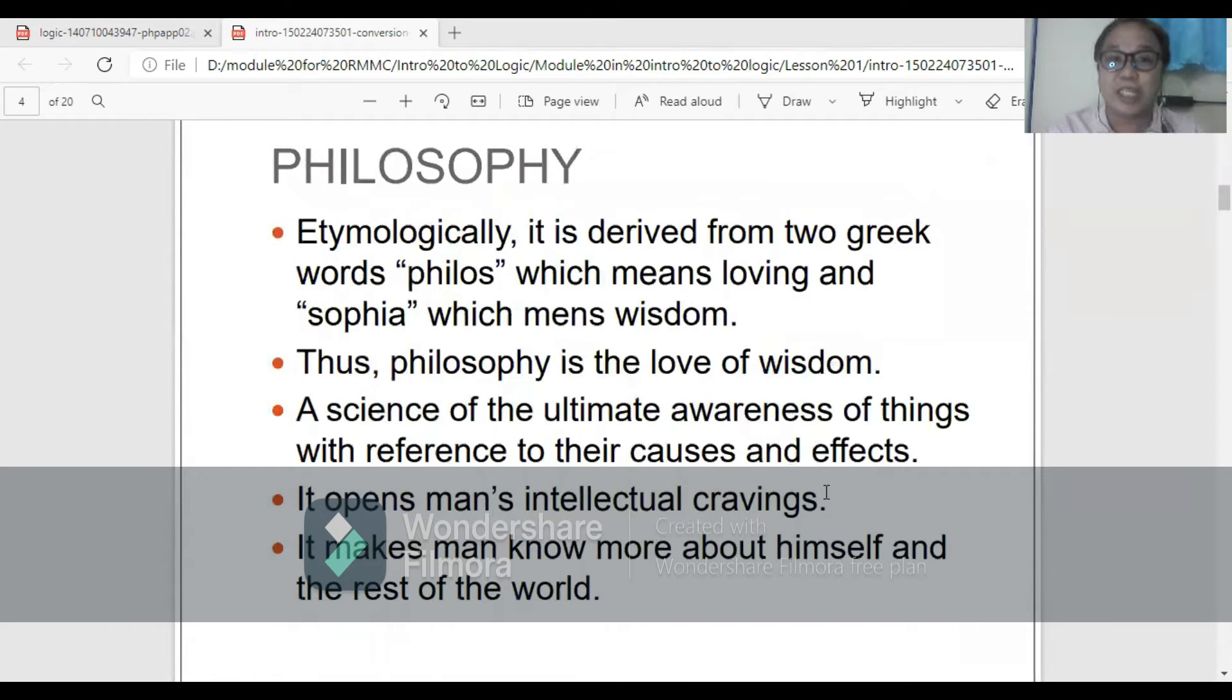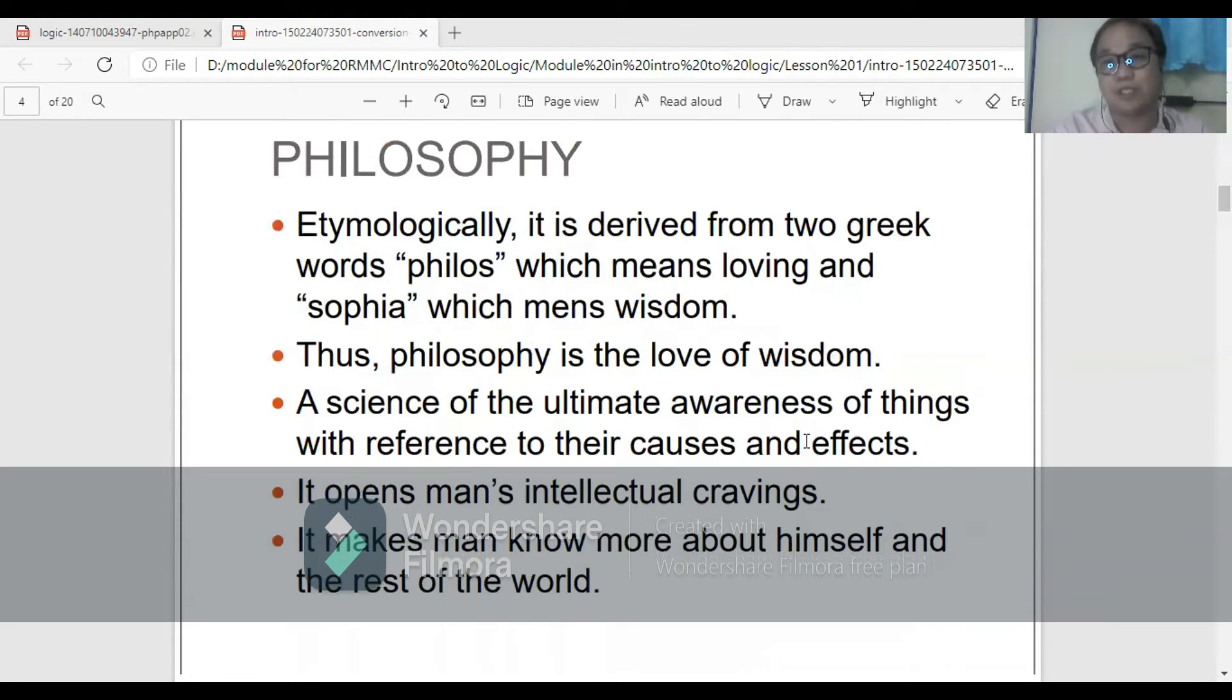So, etymologically, the word philosophy is derived from two Greek words: philos, which means loving, and sophia, which means wisdom. Thus, philosophy is the love of wisdom. It is also a sign of the ultimate awareness of things with reference to their causes and effects. It opens man's intellectual craving and it makes man know more about himself and the rest of the world.